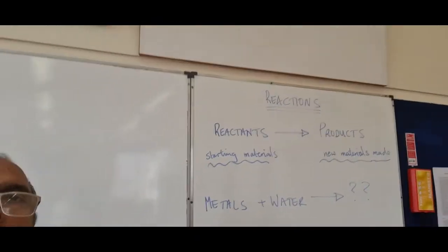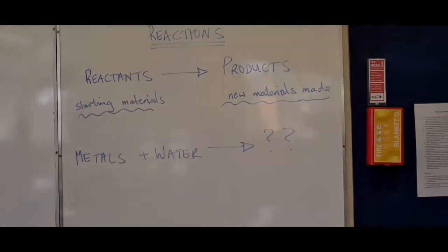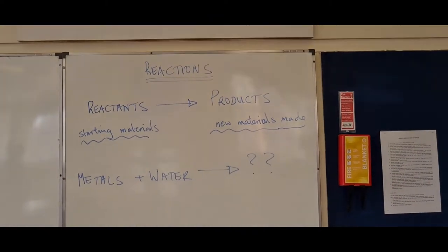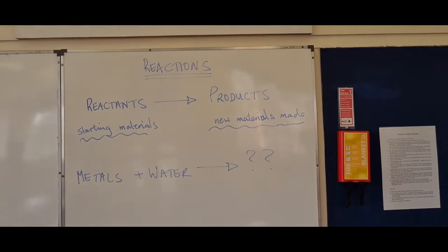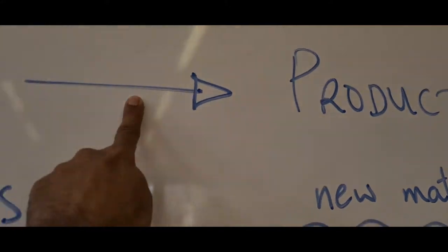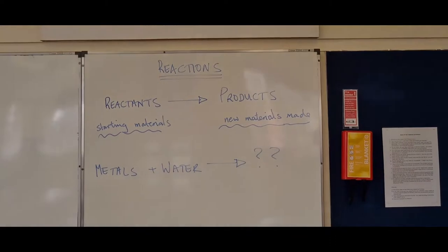When we're doing reactions, the chemicals we start with are called reactants. When we do the reaction, it will make something new — that's what makes it a reaction. If nothing new is made, there's no reaction. The new chemicals made are called products. Reactions are where reactants change into products. The reactants are the starting materials and the products are the new materials. Use an arrow, not an equals sign.